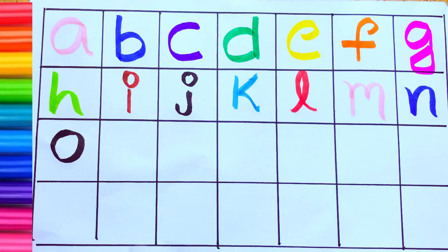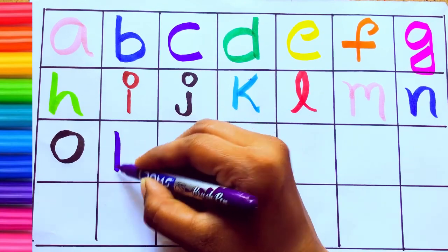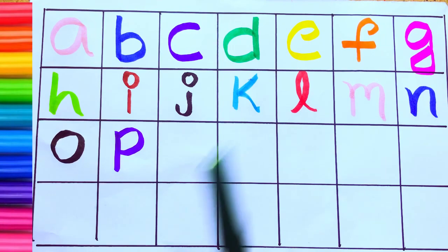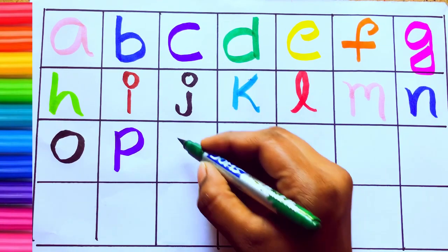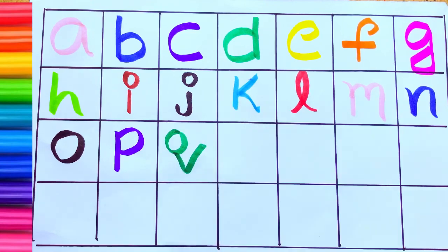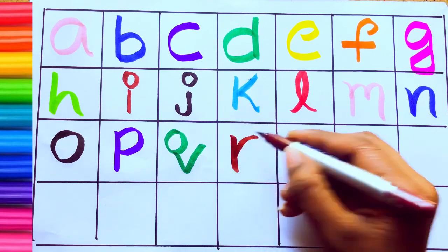Violet color. P, P for parrot. Green color. Q, Q for queen. Brown color. R, R for rose.